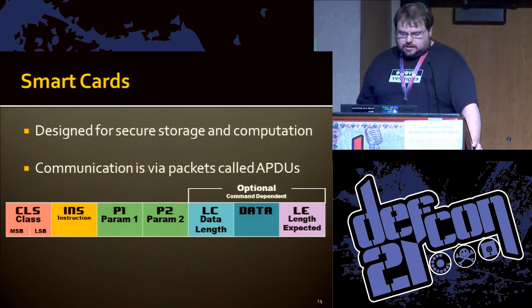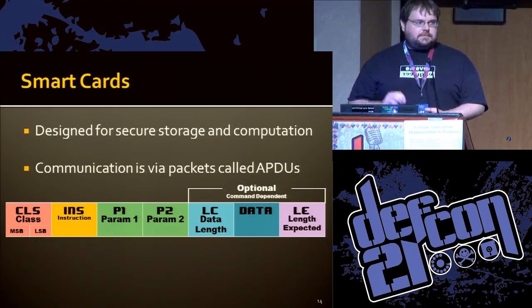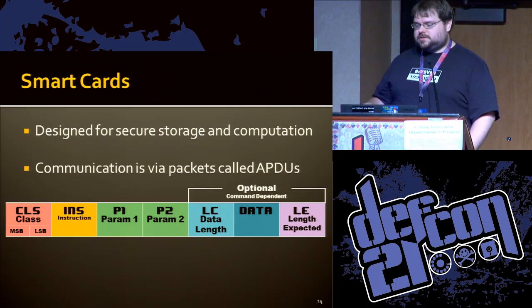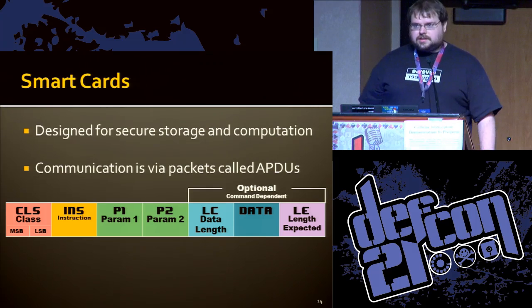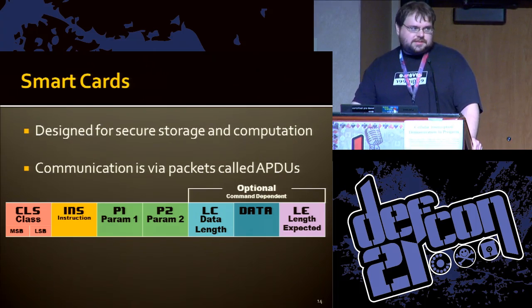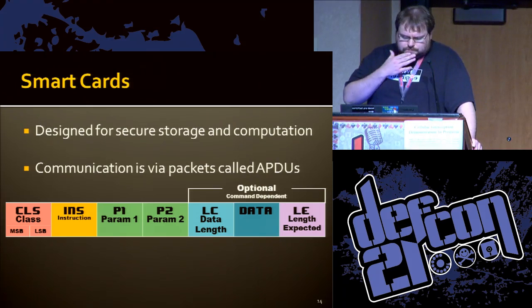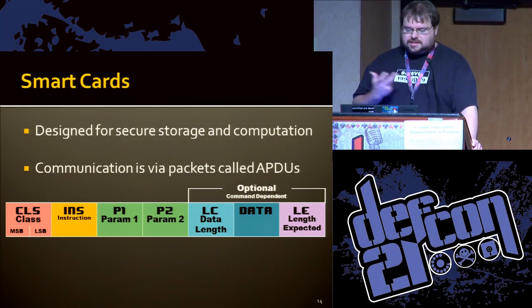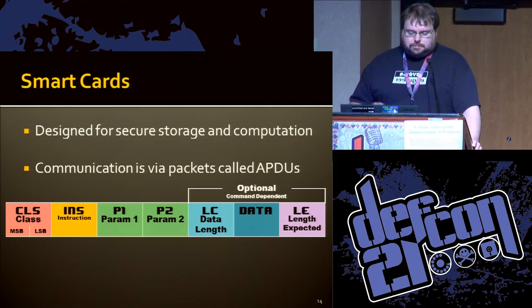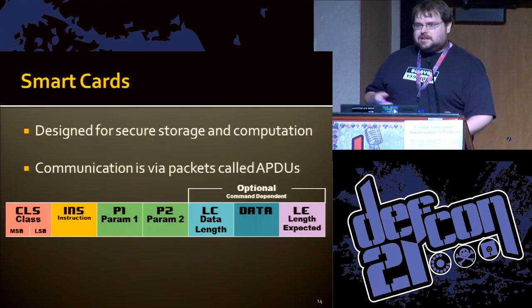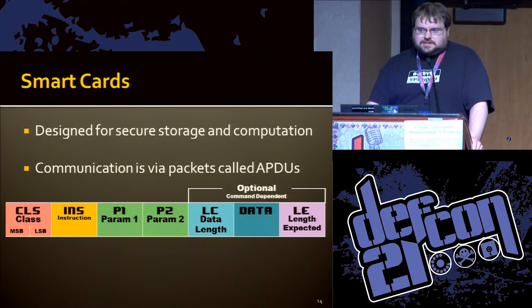Smart cards are designed for secure storage and computation. One key idea is that secret keys do not leave the card — you can ask the card to do things on your behalf, like sign, encrypt, or decrypt things. They're widely used for corporate logins, US government, satellite TV DRM, and e-cash in some parts of the world. The basic interface is APDUs — command and response packets — typically a stream of bytes with an instruction class, a couple of one-byte parameters, and maybe some variable-length data.